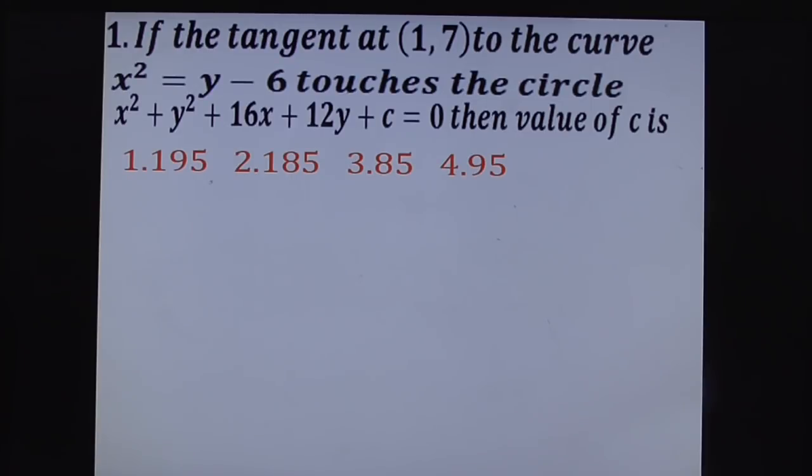Observe this question: if the tangent at (1,7) to the curve x² = y - 6 touches the circle x² + y² + 16x + 12y + c = 0, then find the value of c.